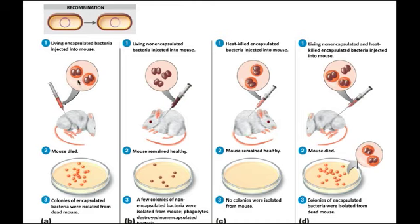He then took the non-encapsulated, non-virulent type and injected it into a mouse — the mouse stayed healthy, and he re-isolated the same non-virulent organism. Next, he took the heat-killed encapsulated version and injected it; the mouse was completely healthy because all the microorganisms were dead. He could not isolate anything because it was heat-killed.